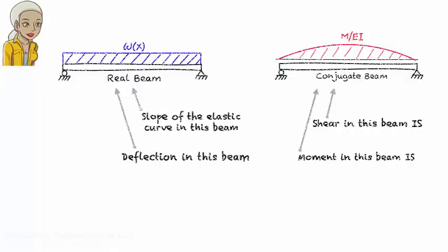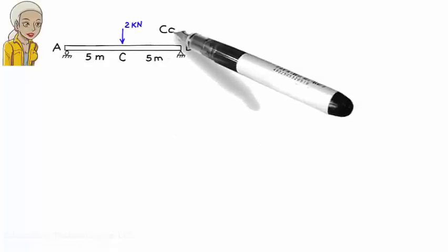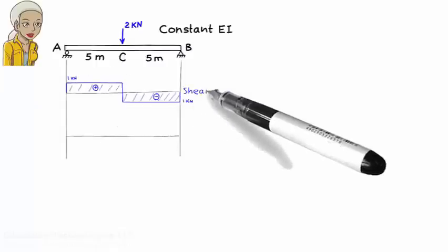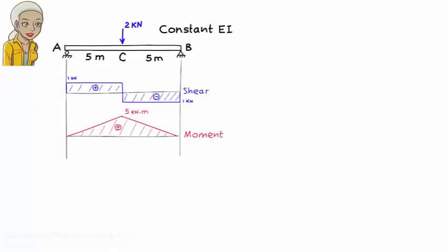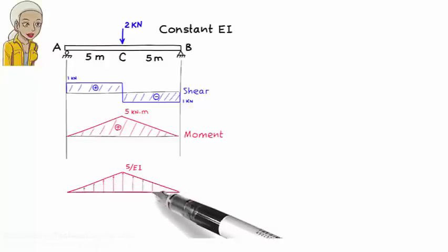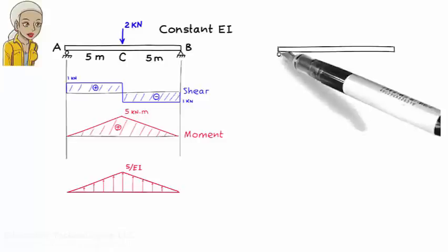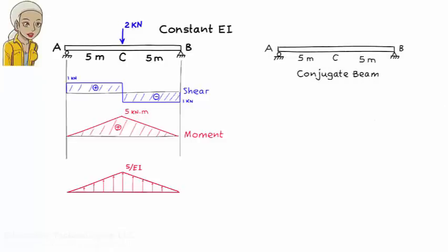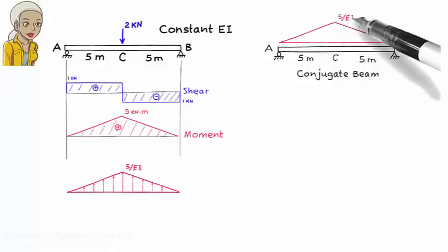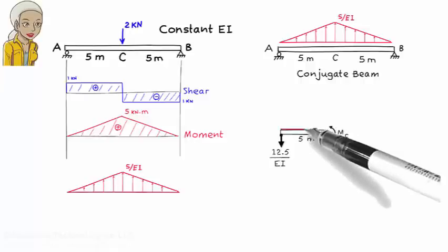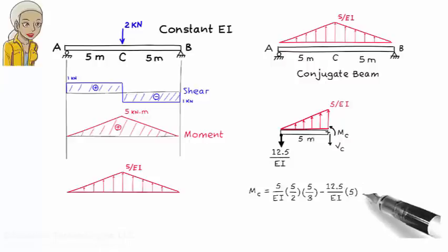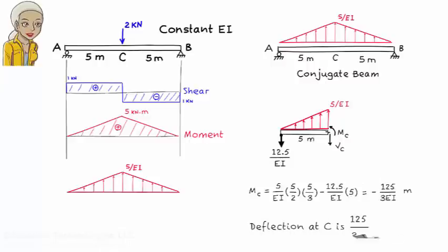Here is a quick overview of these steps. Suppose we wish to determine this beam's deflection under the applied concentrated load at point C. The beam has a constant EI. We start by drawing the beam's moment diagram, then divide the moment diagram by EI to form the M over EI diagram. Now draw what is called the conjugate beam — for this problem, the conjugate beam is the same as the real beam. Place the M over EI diagram on the conjugate beam as applied load, then determine the bending moment at point C in the conjugate beam. This is the deflection in the real beam at point C.